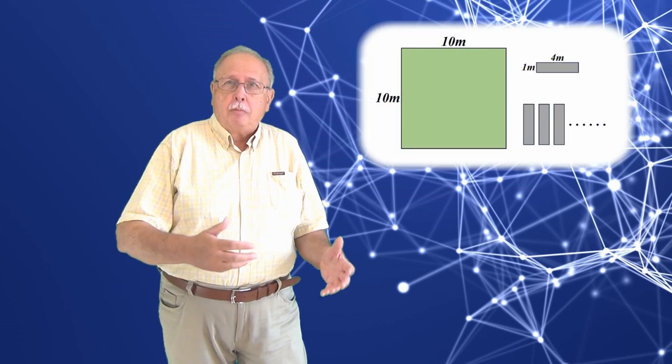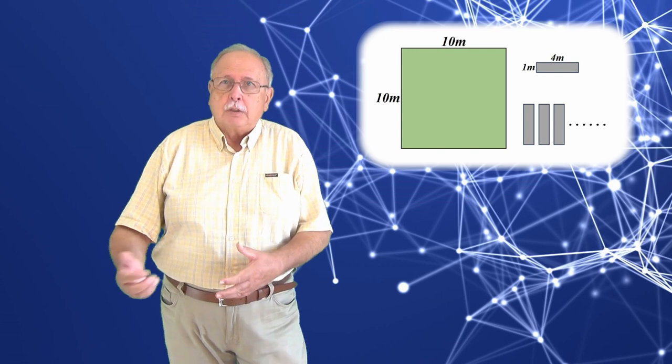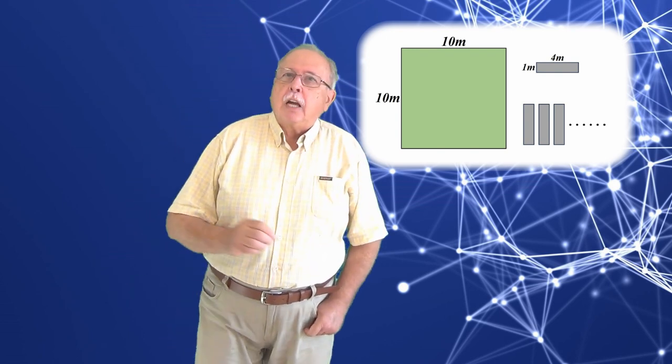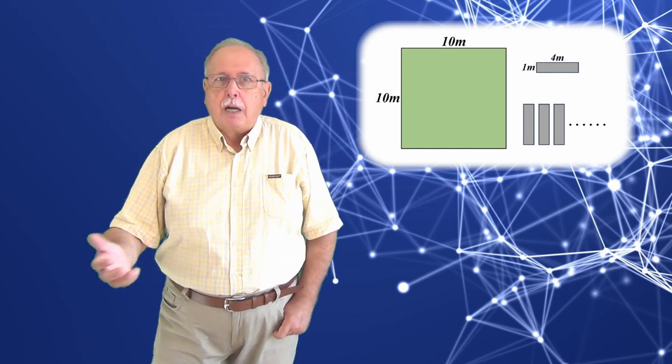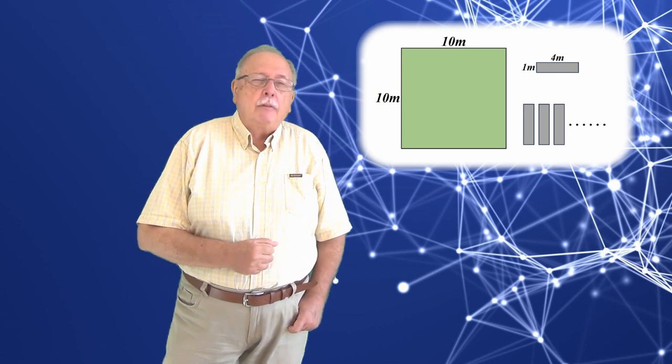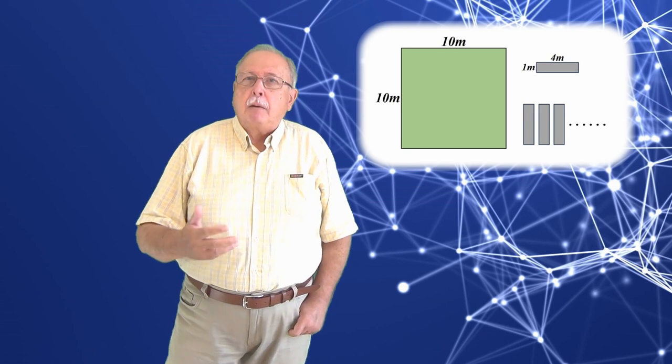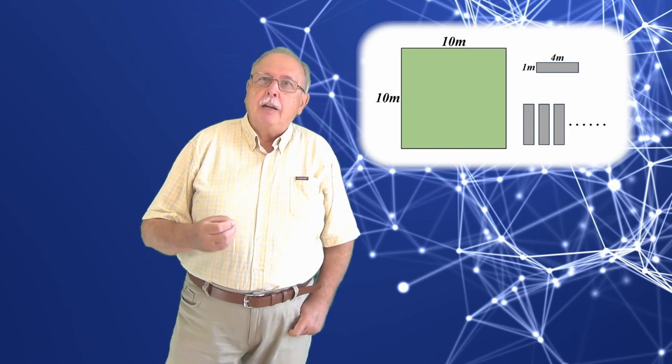Așa cum am spus când am pus întrebarea, e foarte ușor de calculat de câte plăci avem nevoie. Suprafața noastră are area de 10 metri ori 10 metri, 100 de metri pătrați. Și fiecare placă are area de 4 metri ori 1 metru, 4 metri pătrați.